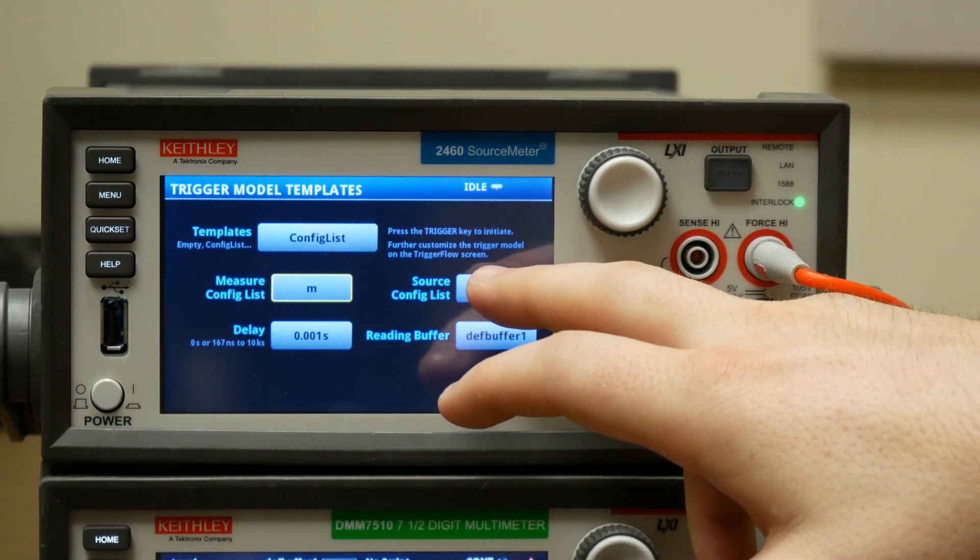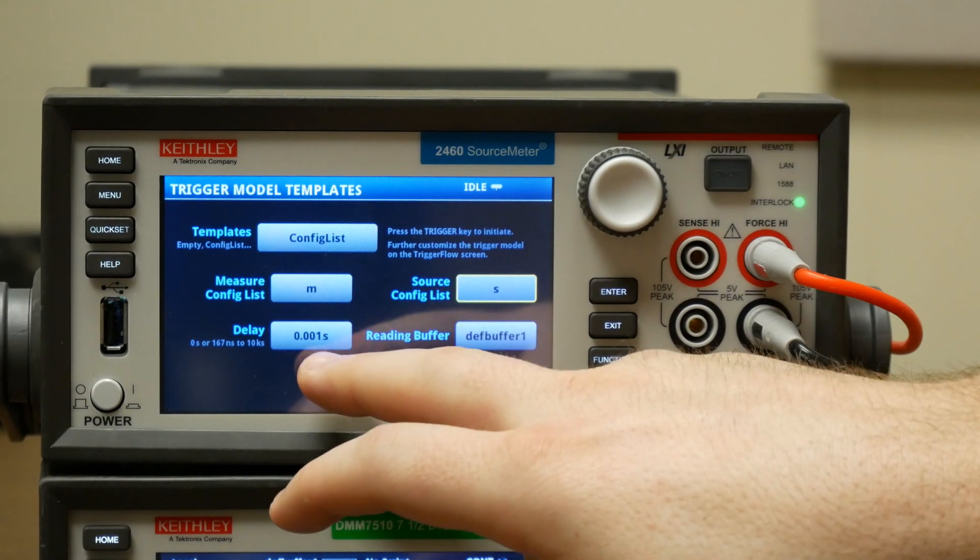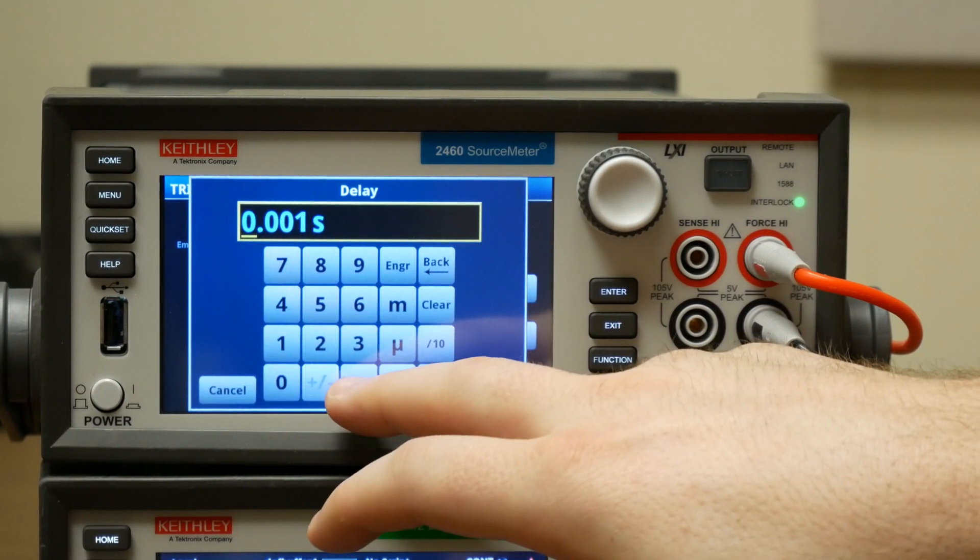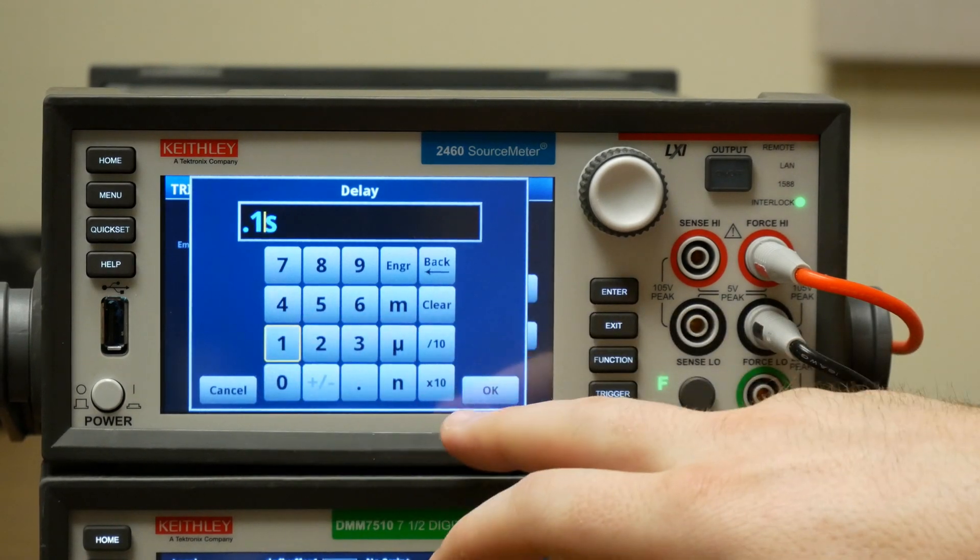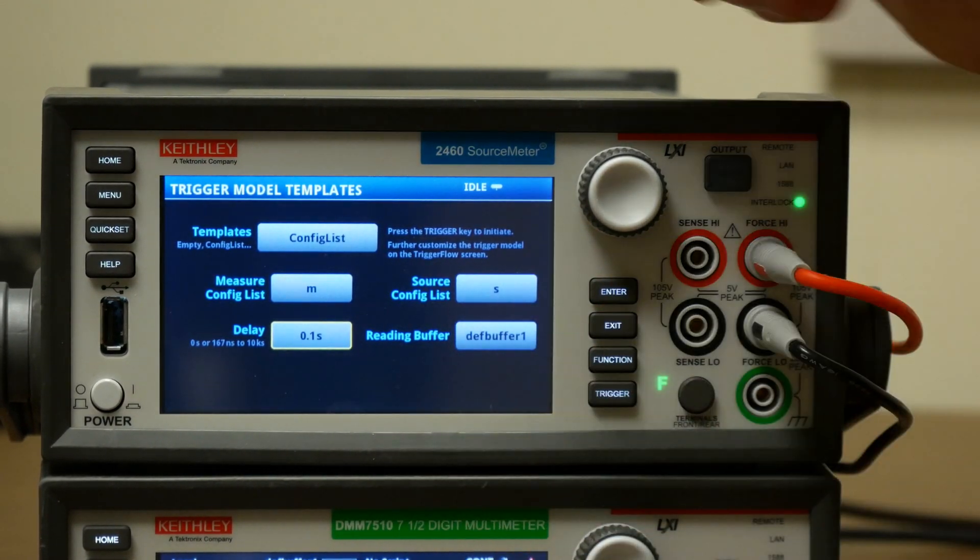and our source config list, which in this case is S, and we can set a delay. In this case, we'll do just a short delay, 0.1 seconds, and it will go into the reading buffer, def buffer 1.